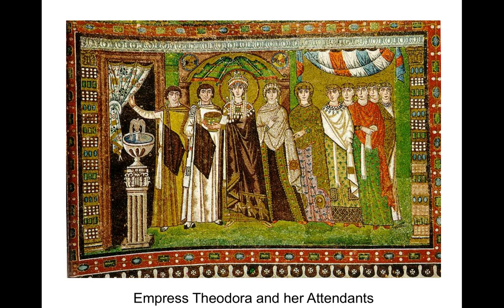We've already looked at some art from the Middle Ages — some examples of Gothic architecture — and we had a nice side conversation about stained glass, which we can get back into when we go to Venice. But I want to take a look at some examples of two-dimensional art. Here we are in the sixth century AD, at the very end of the Western Roman Empire, in Ravenna, a town in northeastern Italy. The Western Roman Empire is in gradual collapse, but the eastern part — what will become the Byzantine Empire — is very much in its ascendancy.